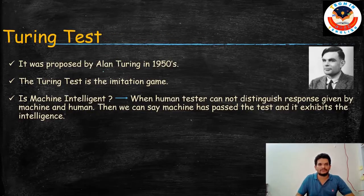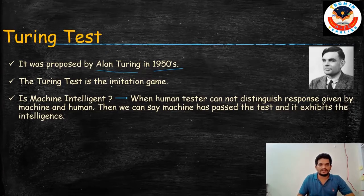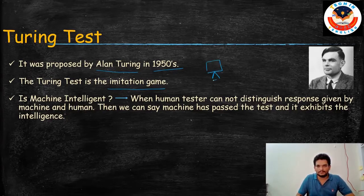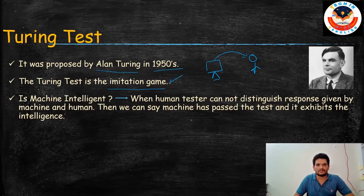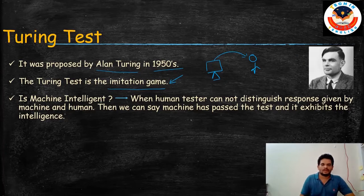The Turing Test was proposed in the year 1950. The Turing Test is an imitation game. Imitation game means that if you have a computer or any machine, it should imitate like a human — that is what the imitation game is. We will be discussing this imitation game in the coming slides.